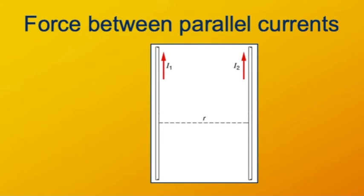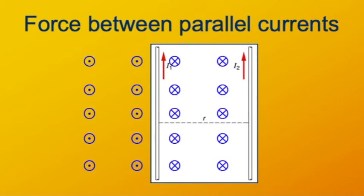Here I imagine two parallel conductors carrying currents I1 on the left and I2 on the right, separated by some distance r. We can use the right-hand rule to tell us the direction of the field created by the wire on the left. Point the thumb of your right hand in the direction of that current, and the fingers curl around in the direction of that magnetic field. On the left side of the wire, the magnetic field comes out of the screen toward you; on the right side, it goes into the screen away from you. The magnetic field strength also gets weaker as you get farther away — that's a 1/R dependency.